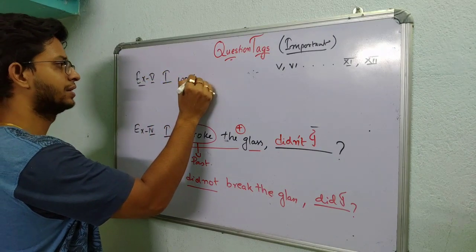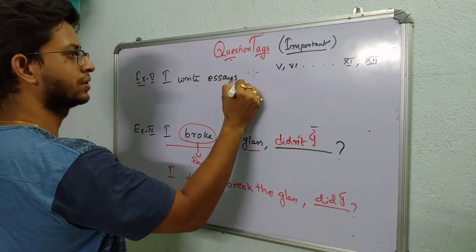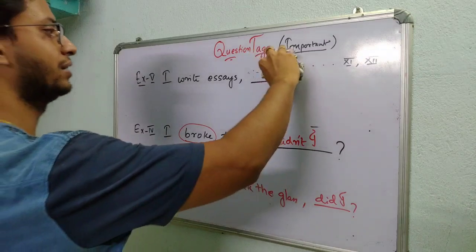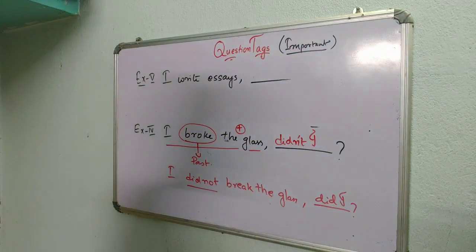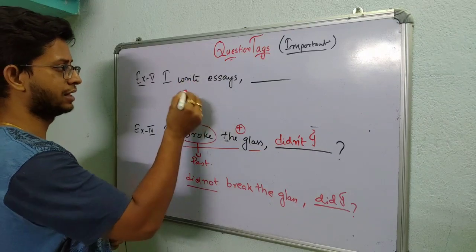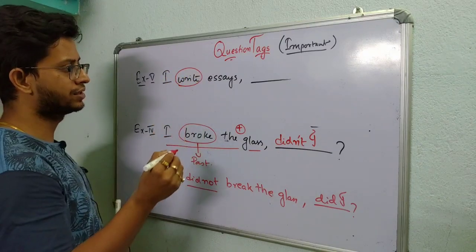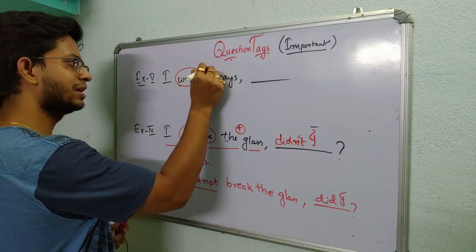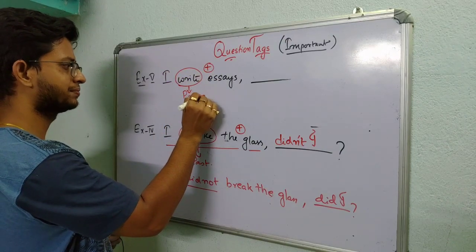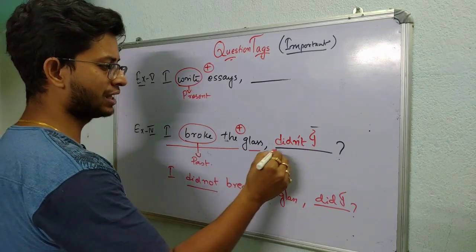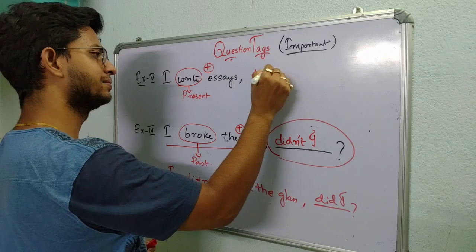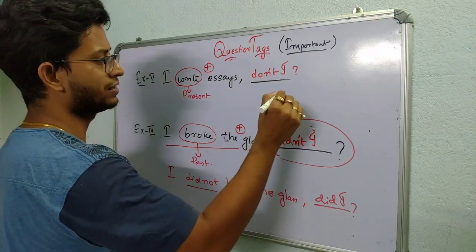So look, what kind of sentence can come in present. So let's say if our sentence is like, then how will it be in this. Let's see example five. See what is in example five. I write essays. Comma. And if they give you a blank and ask you to fill it with using question tag, so how you are going to do it. Let us see. So look, we have to see the main verb. So the main verb here is write. I write essay, it is given in positive sense. Write is in which tense? It is in present tense.